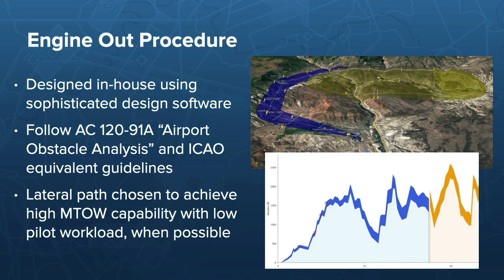On engine-out procedures: we have a whole team working on these. We support over 6,000 custom engine-out procedures right now. We've developed sophisticated in-house software to design these, and we also use Google Earth to visualize them. We take the aircraft performance and either use SIDs or ODPs, or design our own lateral path within the blue corridor outlined by AC 120-91A. We try to balance high maximum takeoff weight with reduced pilot workload by using SIDs and ODPs to get you started. We currently support just over 70 aircraft for runway analysis, with different variants and weight options.